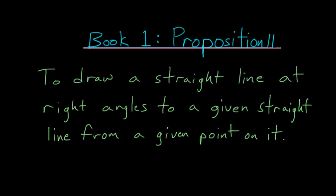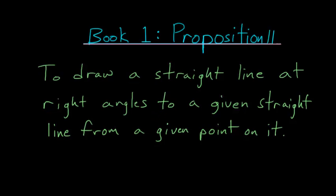Book 1 Proposition 11 of Euclid's Elements is a construction proof that focuses on creating perpendicular lines. To draw a straight line at right angles to a given straight line from a given point on it.